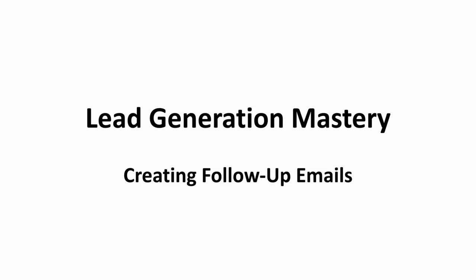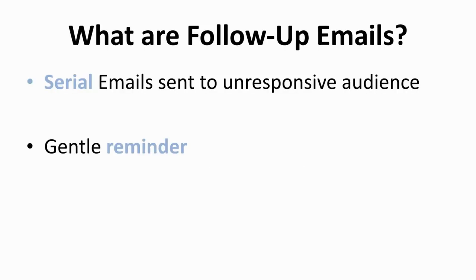Getting the email address of the users is achievable by the methods we've already covered. However, a conversion rate can be improved by sending out follow-up emails. In this segment, I'll be talking about follow-up emails and how to compose them. Follow-up emails are serial emails sent out to unresponsive audiences. Once you've gotten the email address, you can segment them into two groups — one is responsive, while the other is quiet. Follow-up emails are for the ones who are not responsive, composed and sent serially to remind them to act upon your call to action.